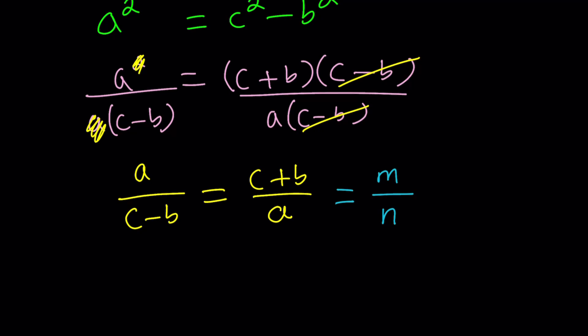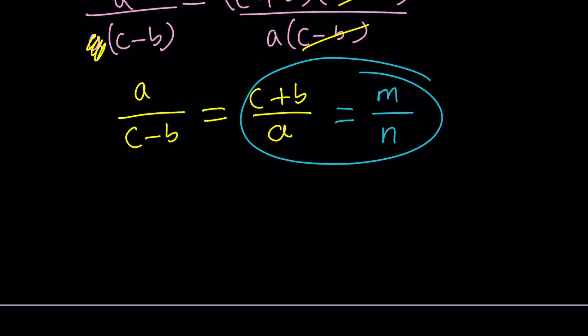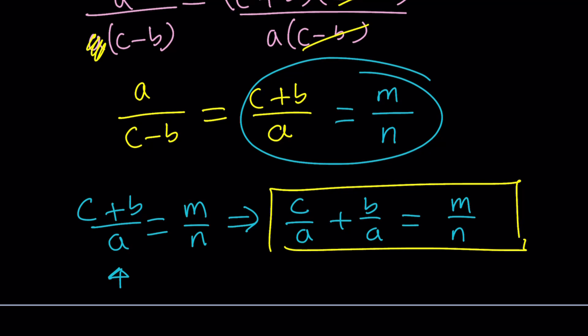Now, what happens if we take two of these expressions at a time? For example, these two first. c plus b over a equals m over n. Now, let's split the expression on the left-hand side. We can write it as c over a plus b over a equals m over n. It's kind of like un-adding two fractions, reversing the process. This is an equation that we're going to use later, so let's box it and save it for future use.